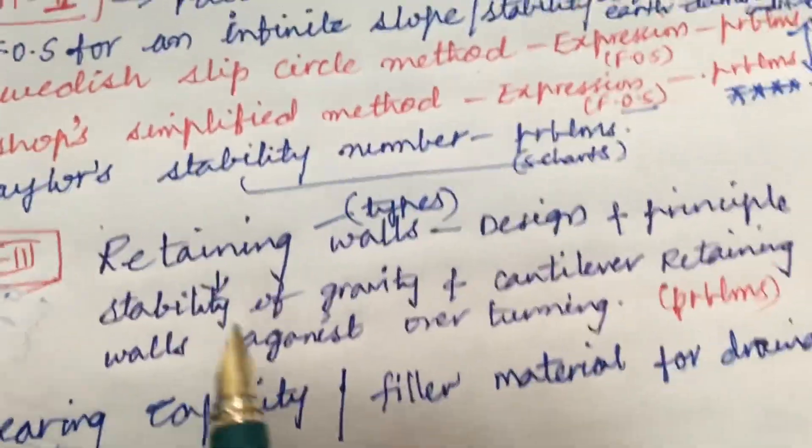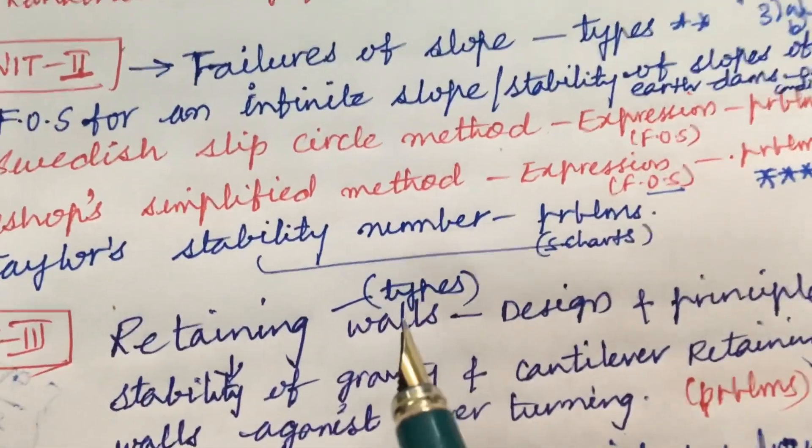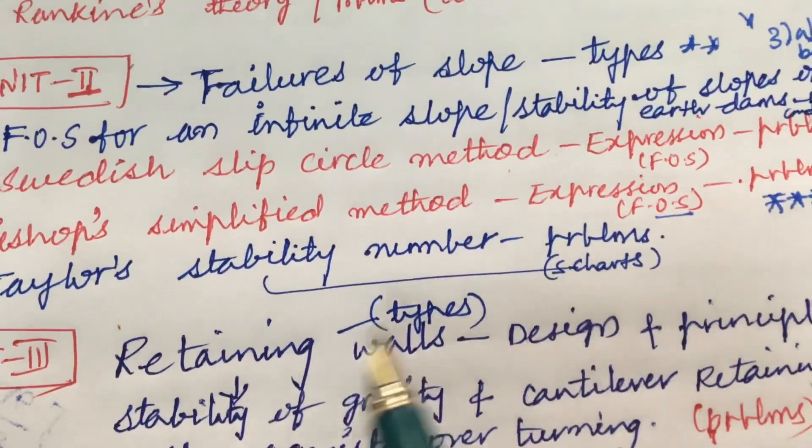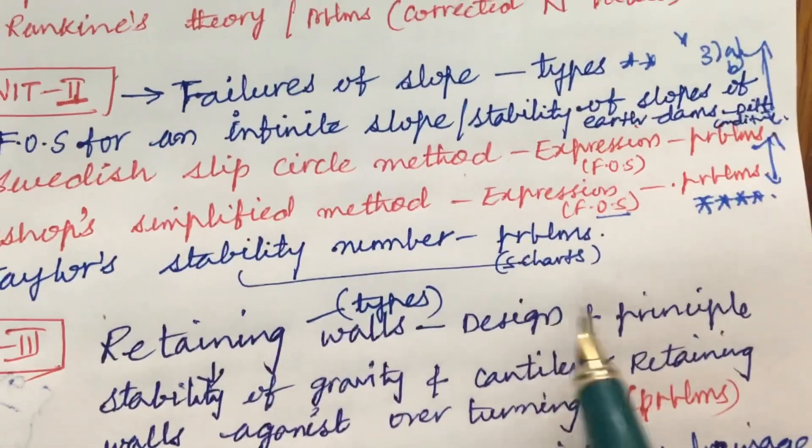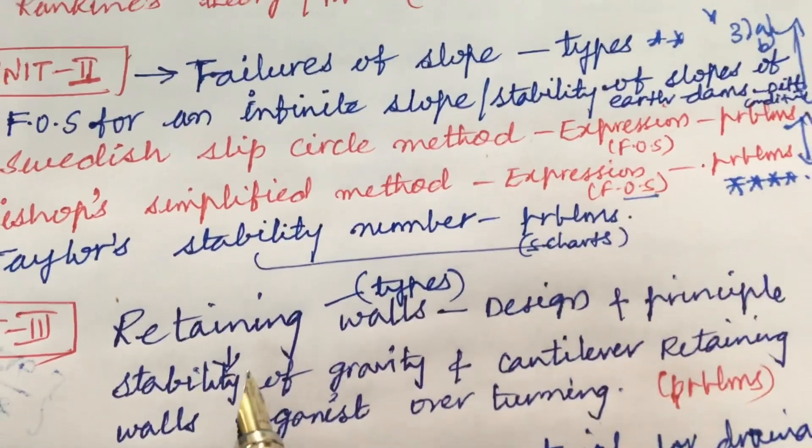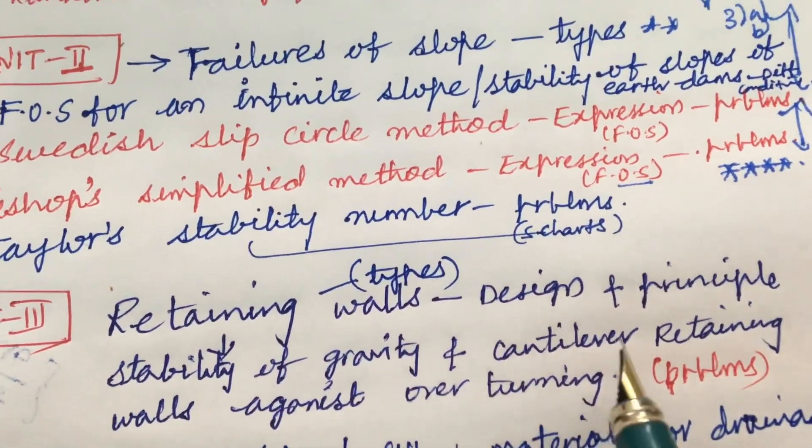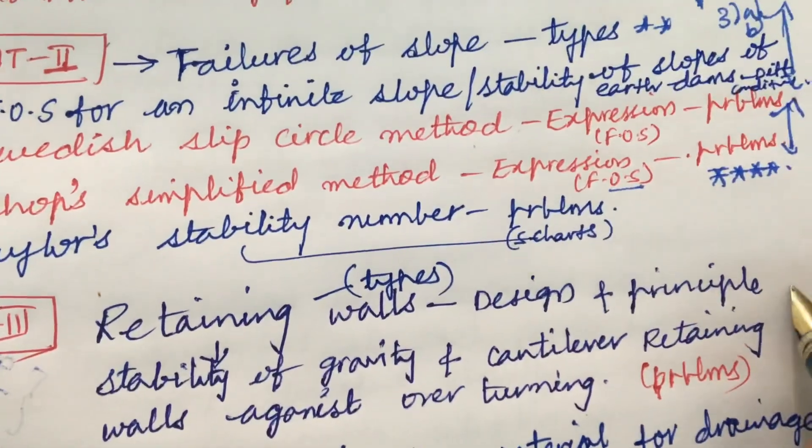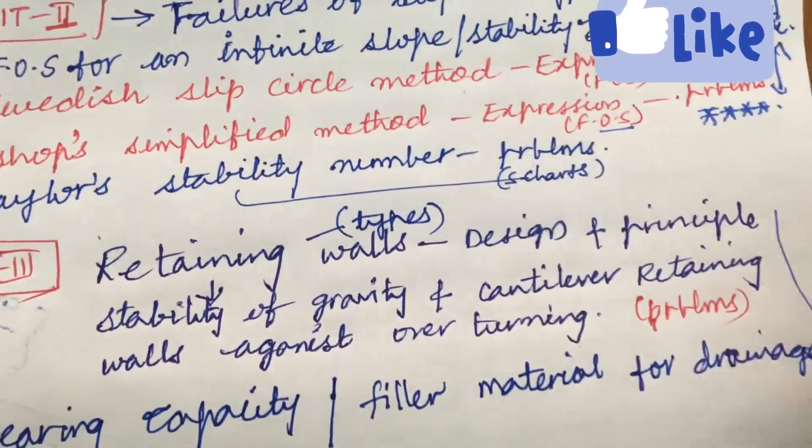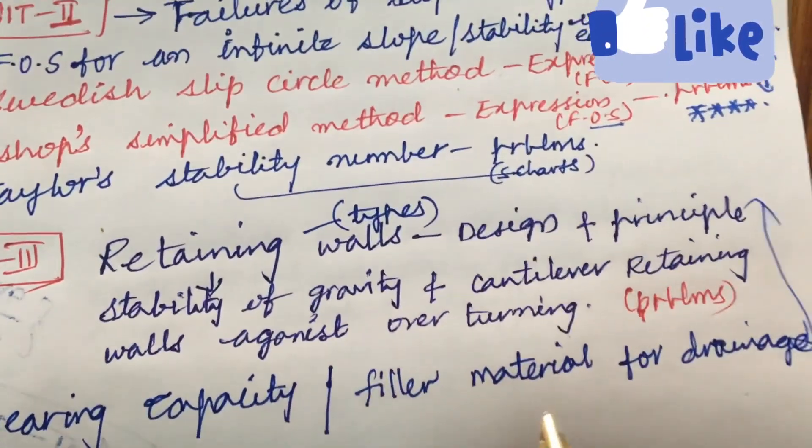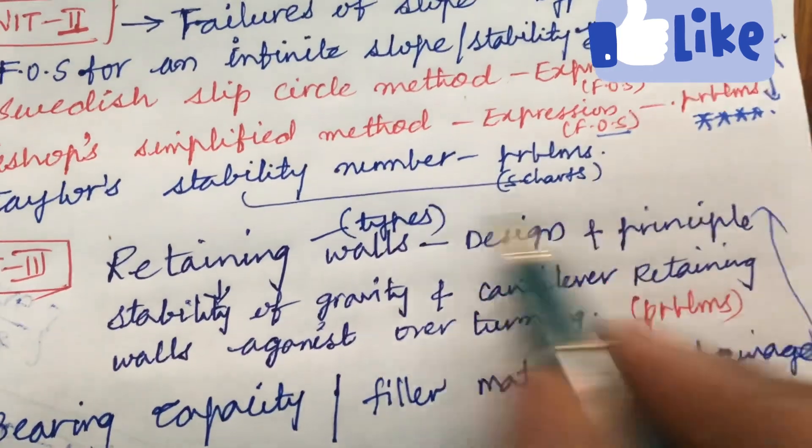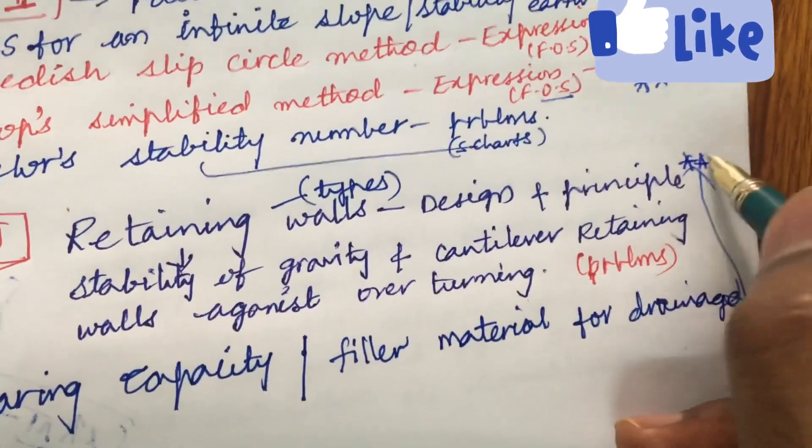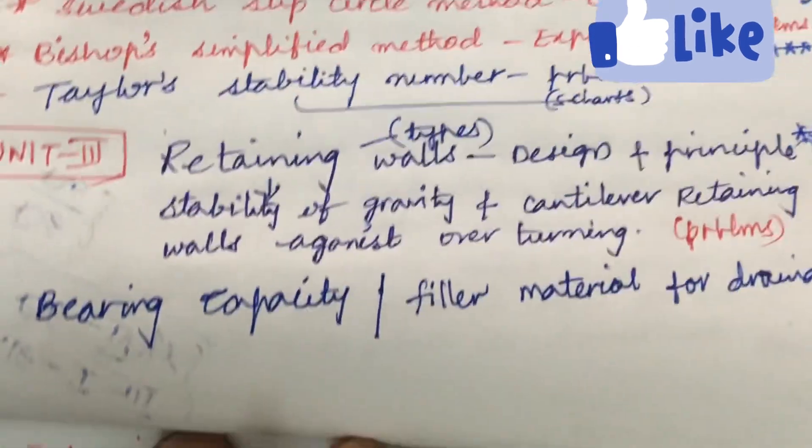Later unit 3 is bit lengthy in its structure but I have taken into consideration only few topics. Make sure to work out what are the different types of retaining walls and its design and the principle as well as the stability of gravity and cantilever retaining walls against overturning and the problems related to this. From these concepts like bearing capacity or the filler material for drainage, you are going to get one question. I can expect that this to be the gunshot question and that is the fourth question.